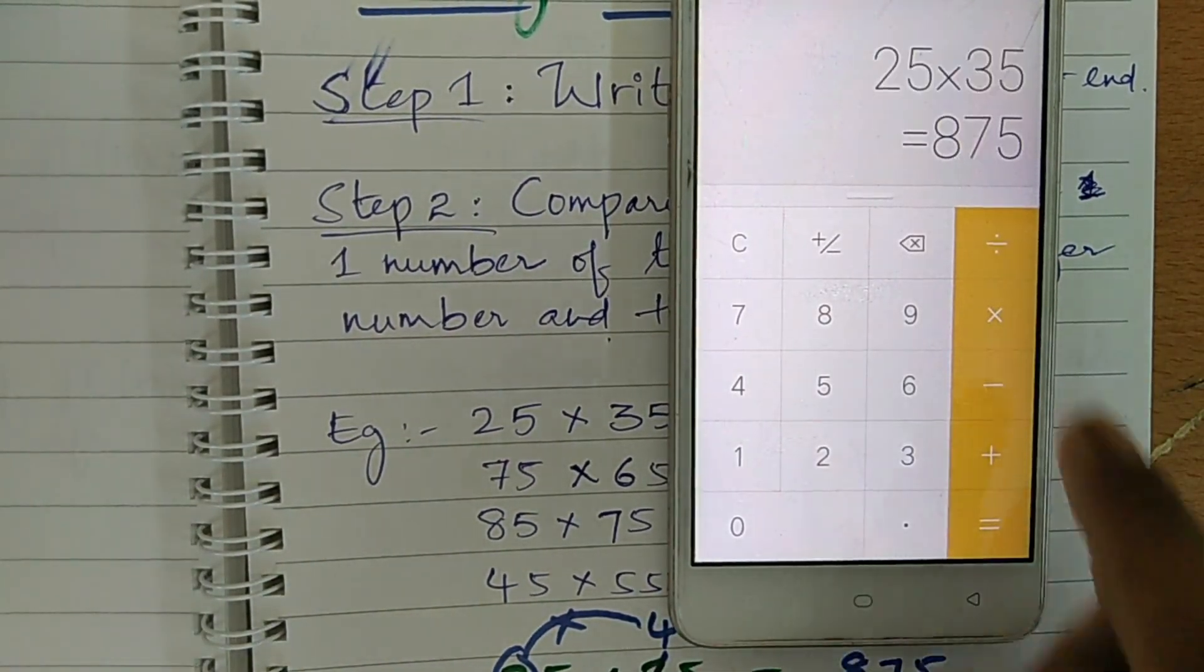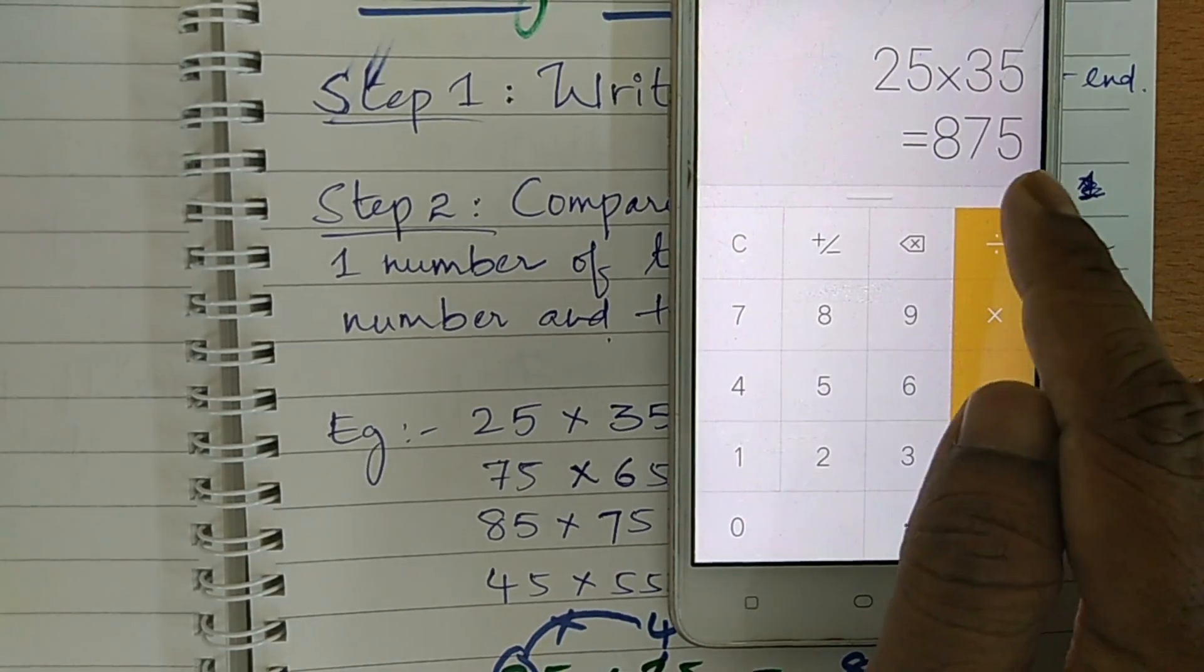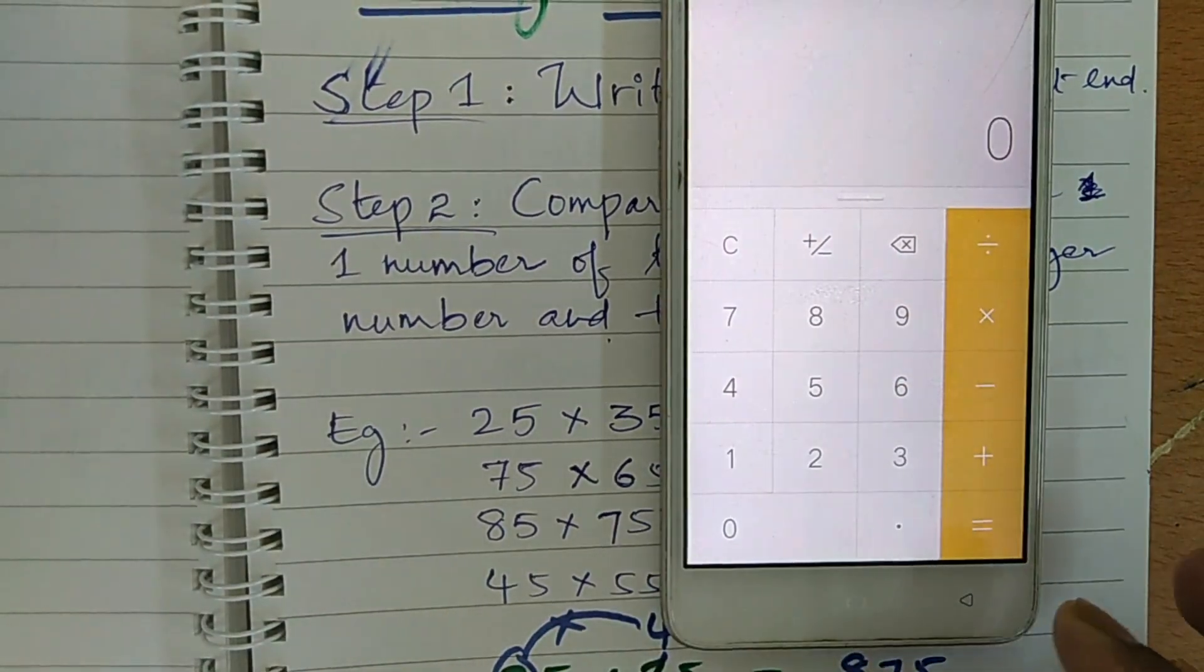25 into 35, then 875. At the last you see here, 75 is repeating.